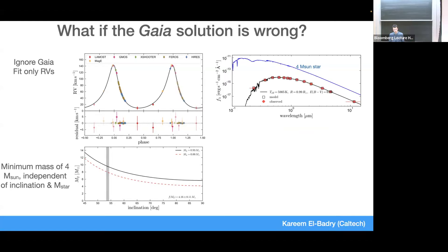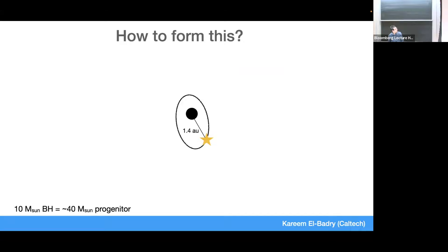Audience question: Could it be two solar masses? Response: Even two solar masses would be much brighter than what we observe — you would need something like 20.2 solar masses to match. Given the good agreement between astrometry and RVs, we believe the inclination, and so we get a little over 9 solar masses.